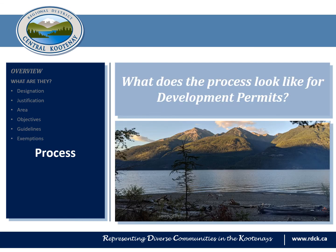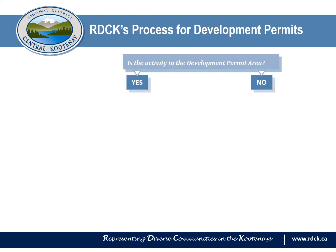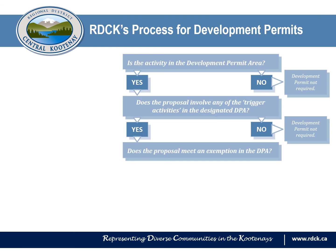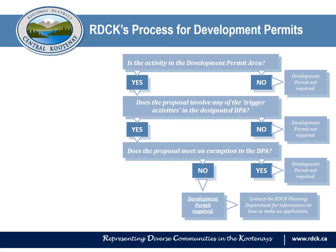The last topic this video will cover is the process for determining whether a development permit applies to you. First, ask: is this activity within a development permit area? If the answer is no, then a development permit is not required. If yes, then ask: does the project involve any of the trigger activities for that development permit area? If no, a development permit is not required. If it does involve one of those activities, then the final question is: does the project meet any of the exemption criteria listed in the DPA? If yes, a development permit is not required. If no, then a development permit will be required.